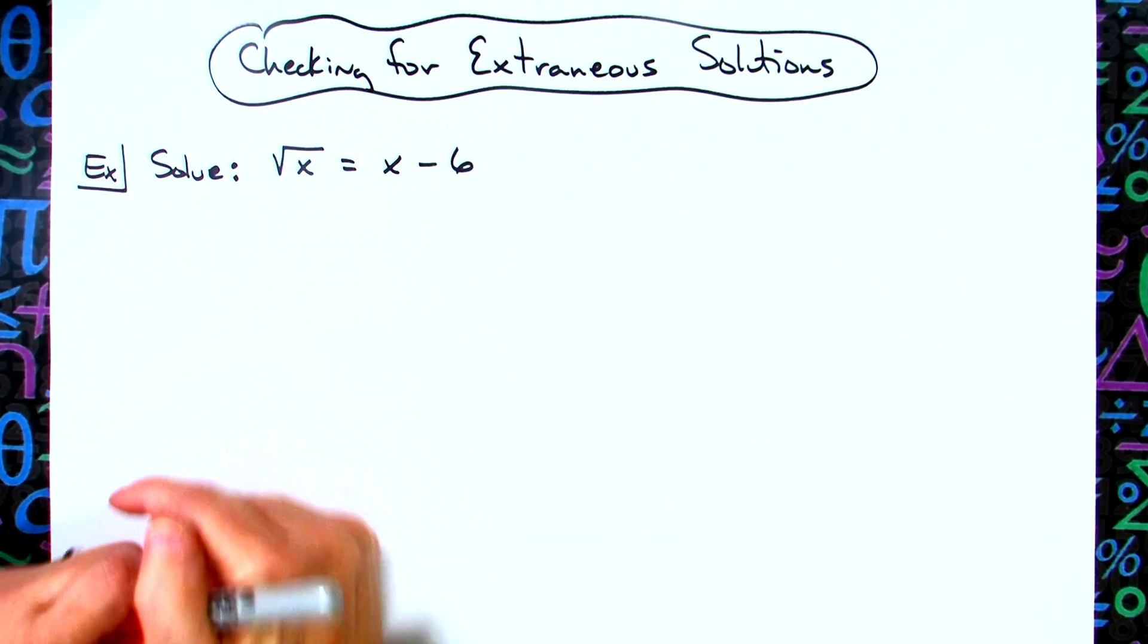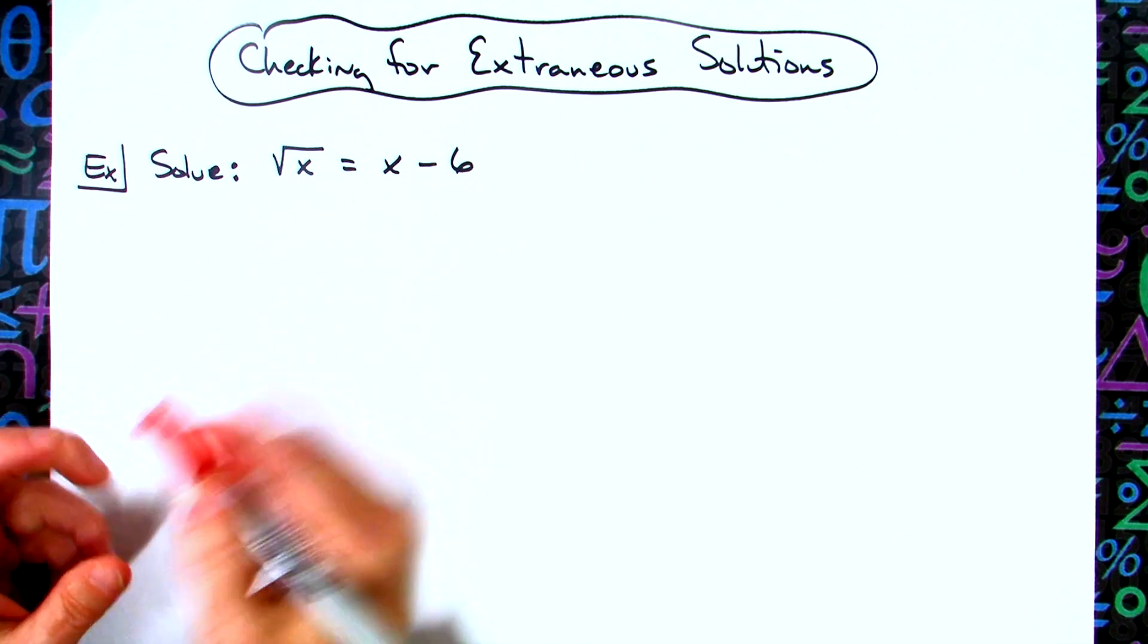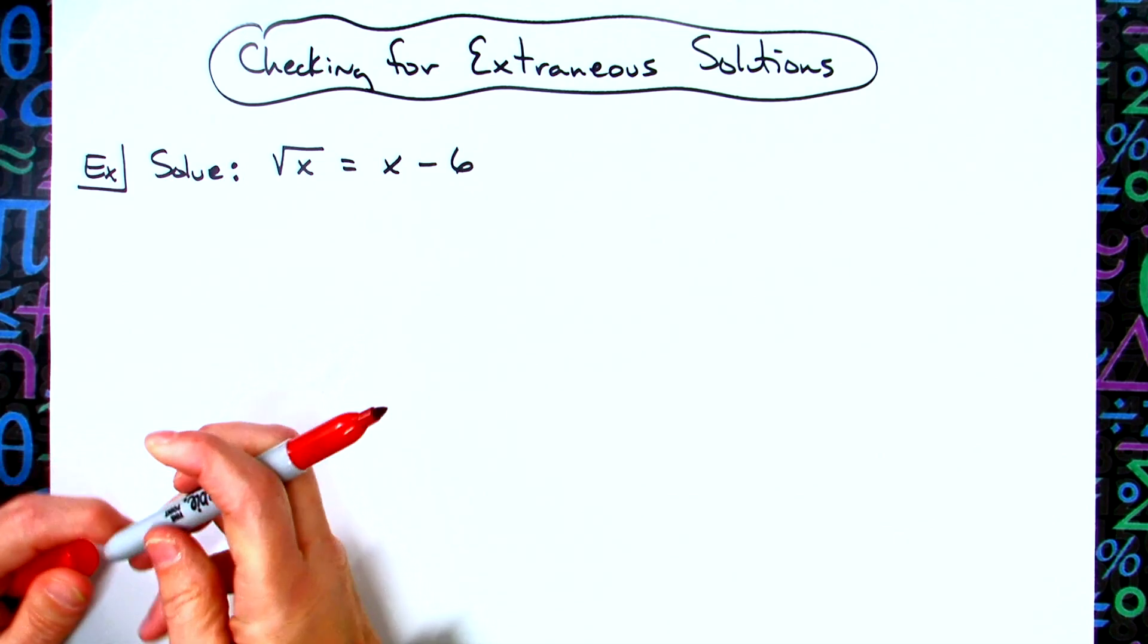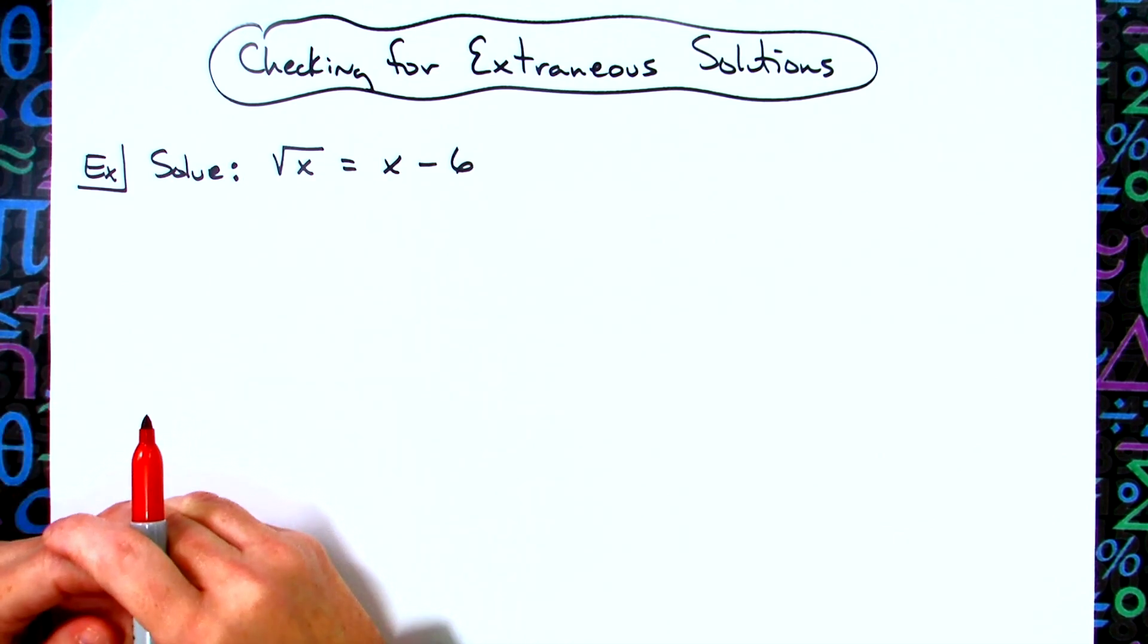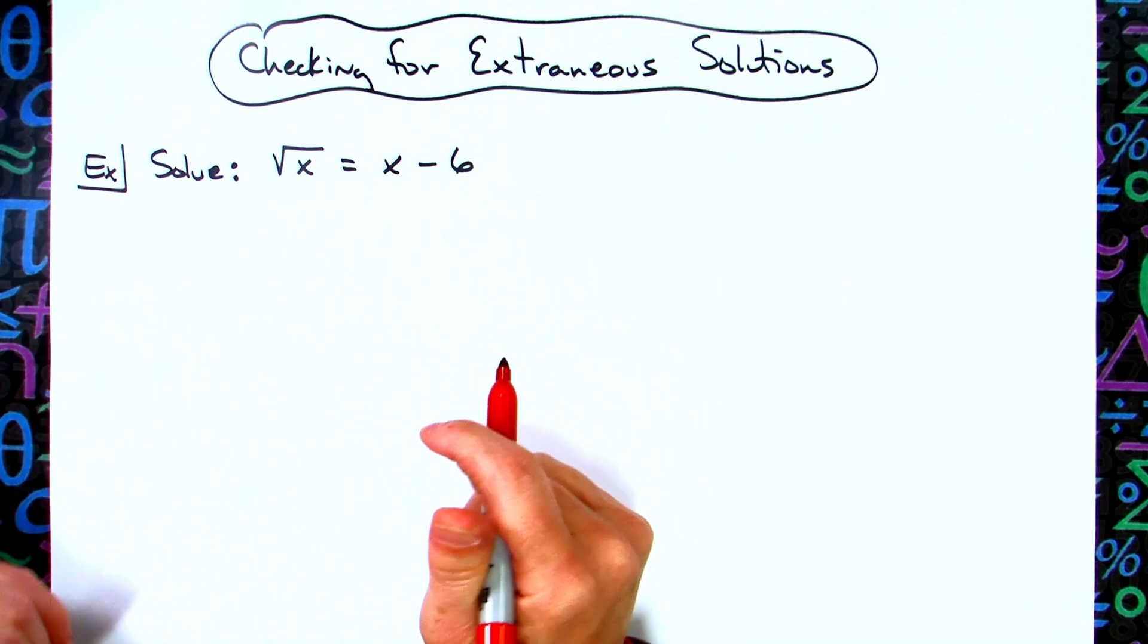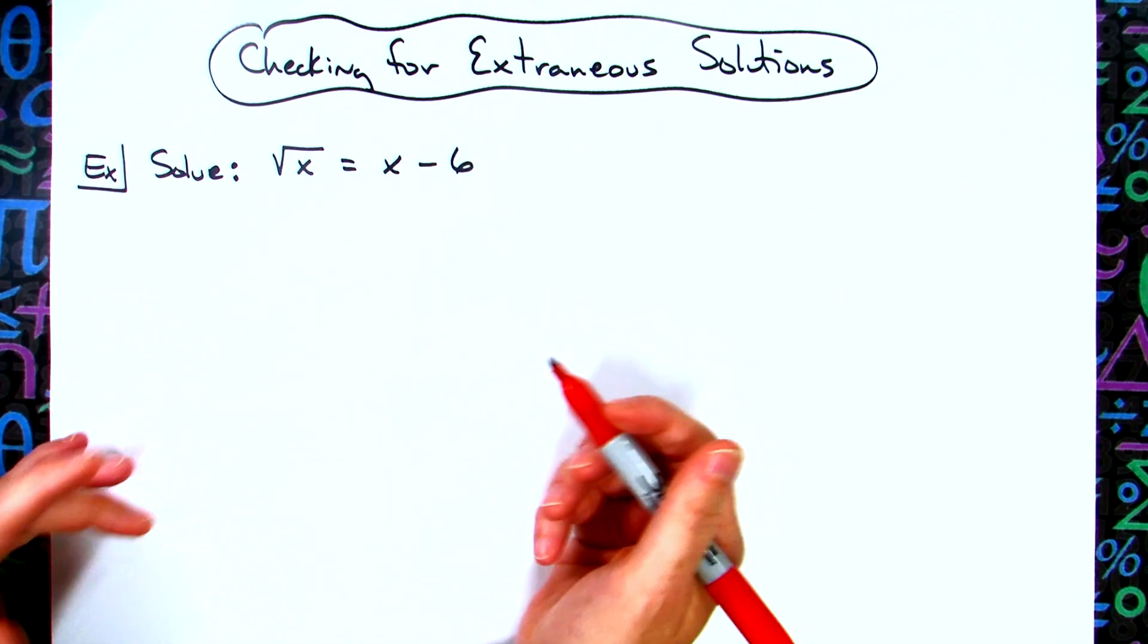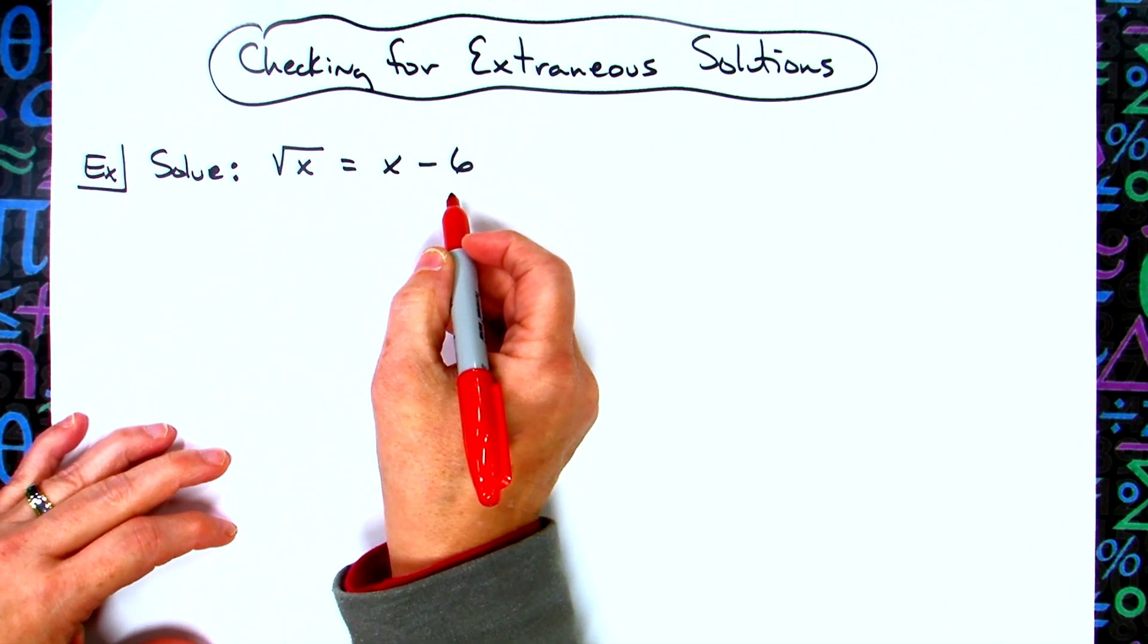In this video we're going to be checking for extraneous solutions after we solve this equation. To start out with, you're not going to realize or know whether or not there's going to be extraneous roots. You're just going to have to solve it and then see what happens.